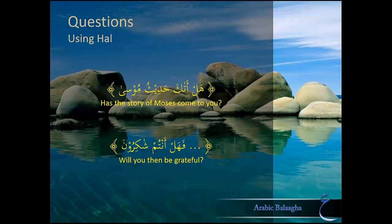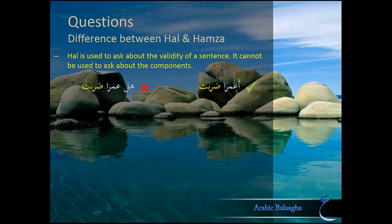But there are a few differences between Hamza and هَلْ. First, هَلْ cannot be used to ask about the components of a sentence; it can only be used to ask about the sentence as a whole. So you wouldn't be able to say هَلْ عَمْرٌ ضَرَبْتَ (Was it Amr that you hit?). All you're allowed to say is هَلْ ضَرَبْتَ عَمْرًا (Did you hit Amr or did you not hit Amr?).